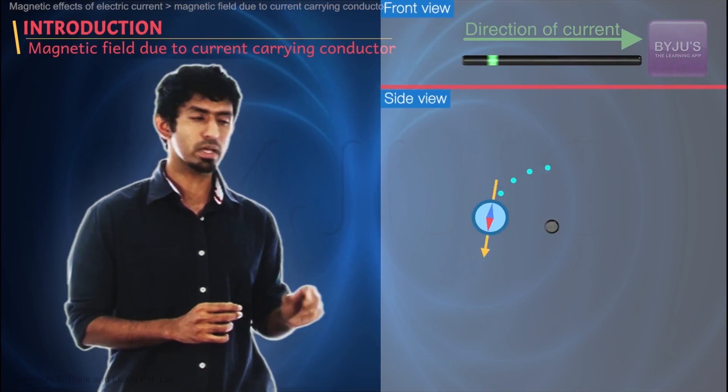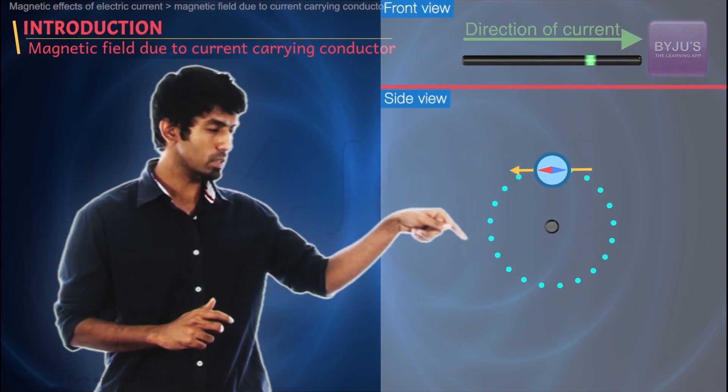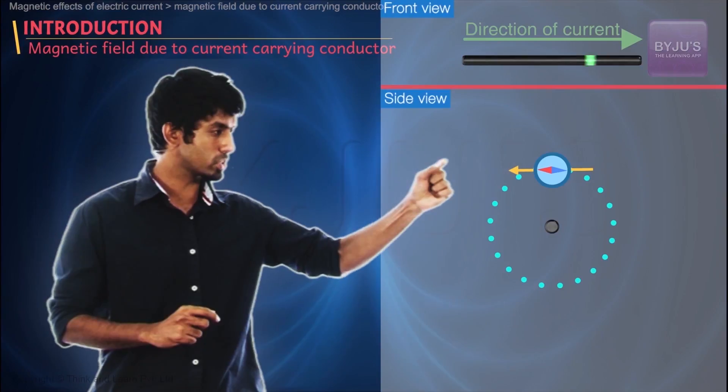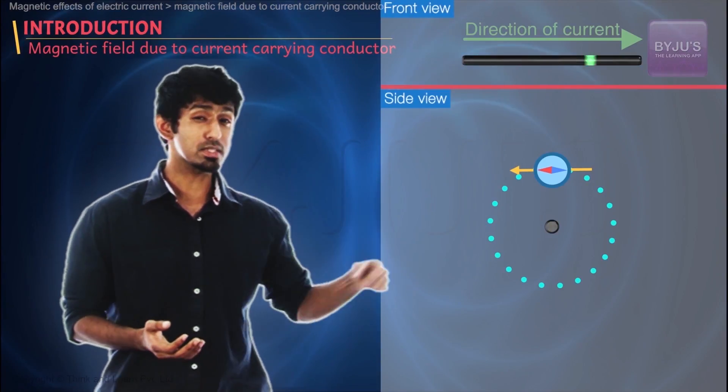If I were to take a compass and keep it in various points, he found something very fascinating. That the compass points in a direction that's tangential to an imaginary circle. And that means what? That these field lines, like we define it.